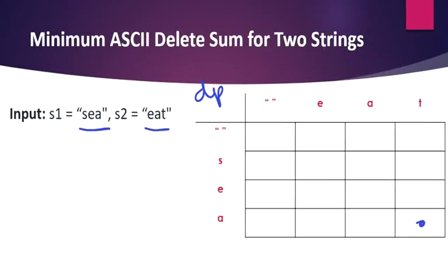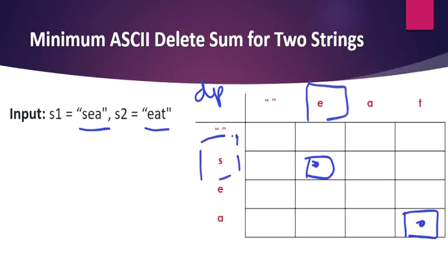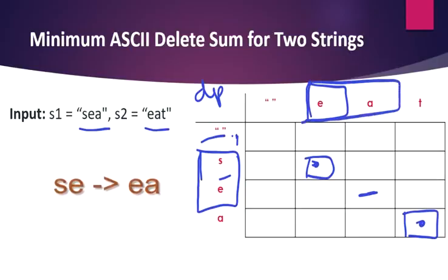Before filling these cells, understand that each cell represents a sub-problem — every cell solves a smaller version of the problem. We proceed with the optimal sub-problem solutions to arrive at the final optimal solution. For example, a given cell represents how many characters need to be deleted from a substring of S1 to match a substring of S2, or equivalently, what characters must be deleted from both substrings to make them equal.